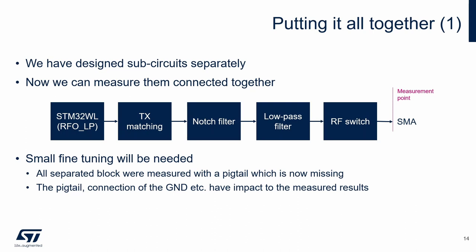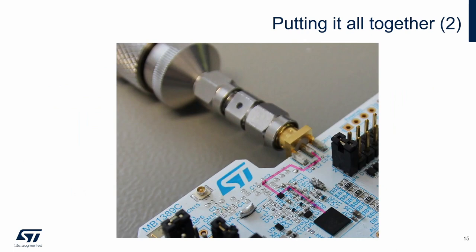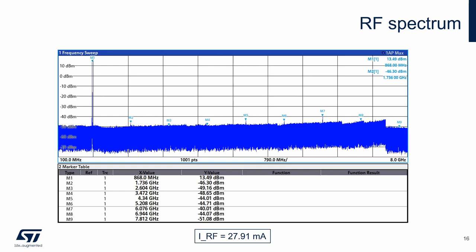Here we can see the path of the transmitter being measured now. The antenna matching network is bypassed by a zero ohm resistor. A spectrum analyzer connected to the SMA connector through the RF cable is used. The higher harmonics have been attenuated and the fundamental harmonic is still at a good level, about 13.49 dBm. The current is about 28 mA, which is more than our target of about 25 mA, so we can fine-tune the current.